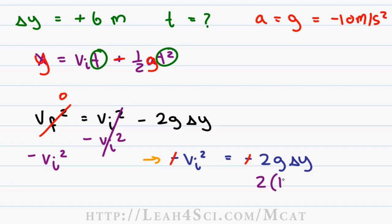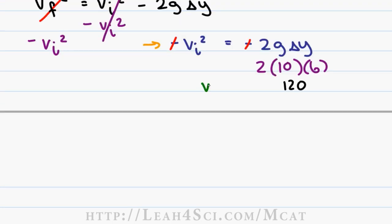We have 2 times g, which is 10 meters per second squared, and delta y, which is 6. I like to multiply the numbers that don't have a 10 in it first because multiplying by 10 is the easier step. 2 times 6 is 12, 12 times 10 we just add the zero, that's 120. And if v initial squared is equal to 120, we take the square root of both sides to get v initial. 120 is very close to 121, and the square root of 121 is 11, so let's say that this is equal to 11.